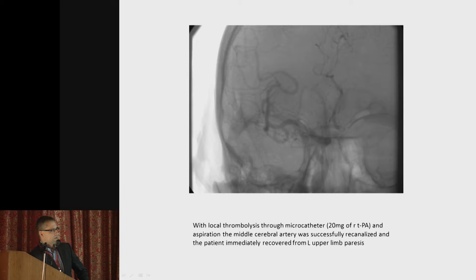Using a combination of local thrombolysis and aspiration, the neuro-interventionist managed to recanalize the branches of the middle cerebral artery, and the patient almost immediately recovered from left upper limb paresis. The rest of the post-operative period was uneventful from a neurological point of view.